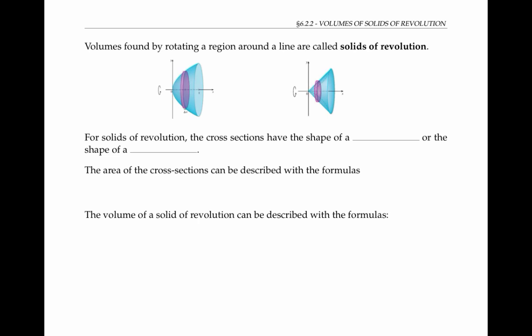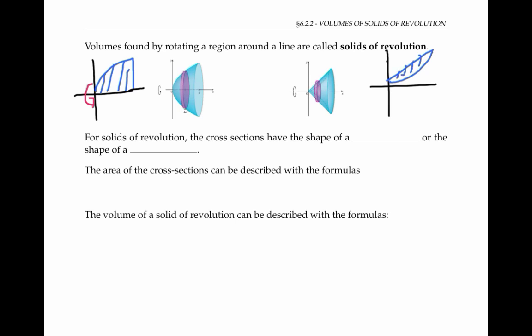In this figure on the left, this three-dimensional object is formed by rotating a region of the plane shaped like this around the x-axis. The solid on the right can be formed by rotating a crescent-shaped region of the plane, again around the x-axis. If we slice these two solids of revolution using planes perpendicular to the x-axis, on the left side our cross sections look like disks. A disk here means the inside of a circle.